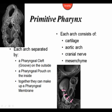Looking at this coronal section in one of Dr. Sulik's scanning electron micrographs, we can see an arch. On the outside, it is separated from other arches by a pharyngeal cleft. On the inside, these are called pharyngeal pouches. If we want to consider the two together, we can call them a pharyngeal membrane. Each arch consists of cartilage, a blood vessel — one of the aortic arches — a cranial nerve, and some mesenchyme.